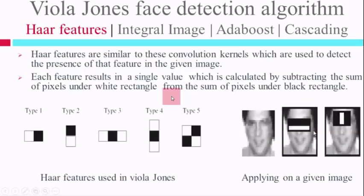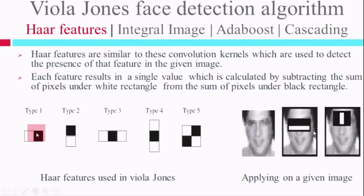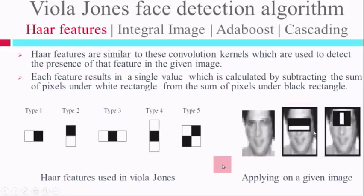Now let us understand what HAAR features are. HAAR features are similar to those convolutional kernels, used to detect the presence of a feature in the image. If you look at a HAAR feature, a black region is replaced by plus one and the white region is replaced by minus one — exactly like a convolutional kernel of one row and two columns, where the right column is plus one and the left column is minus one. To apply this mask to an image, we subtract the pixel values under the white region from the pixel values under the black region, and the output is a single value.